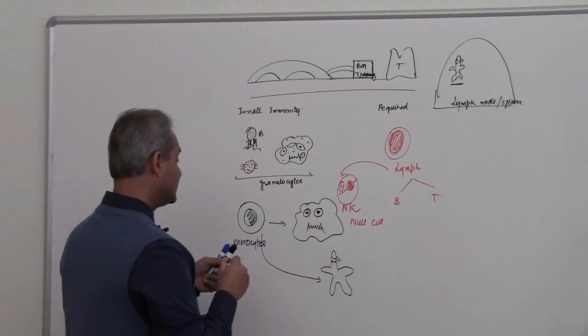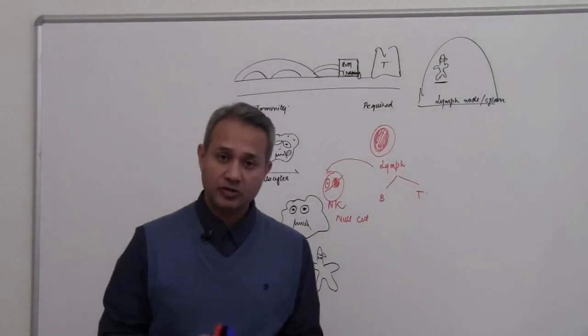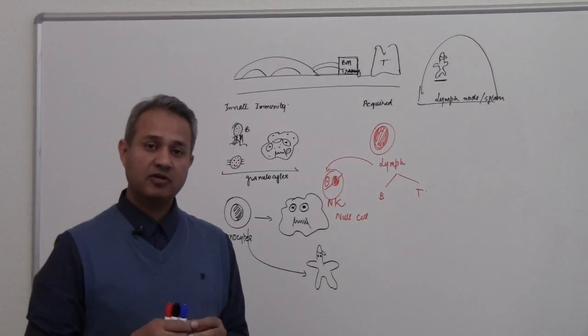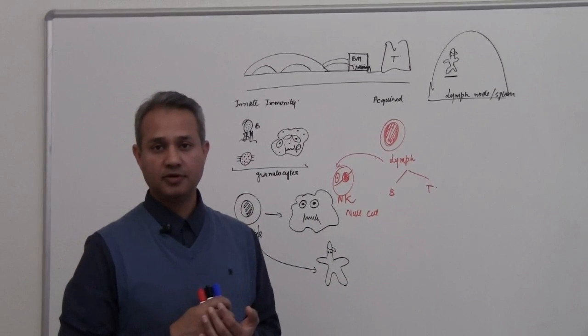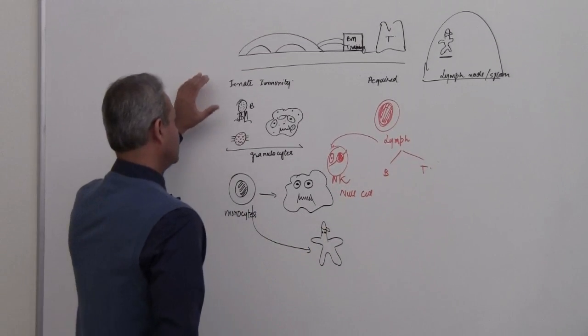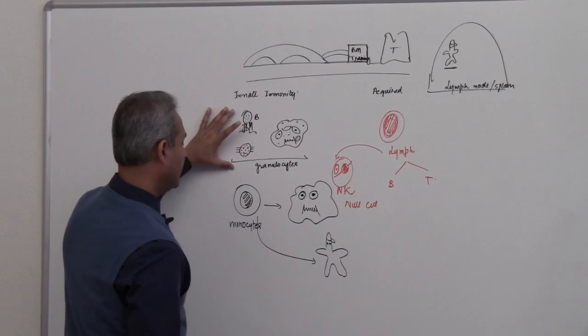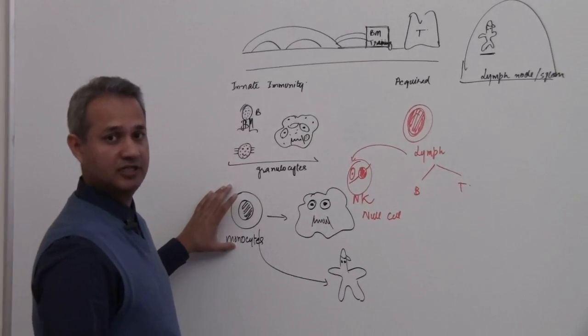So once again the cells, we are doing now the cellular basis of immunology or immunity. So cellular, not immunology, immunity. So cellular basis of immunity. Granulocytes and monocytes.